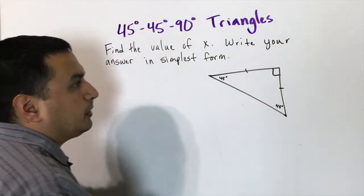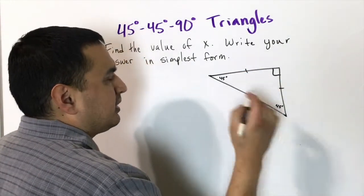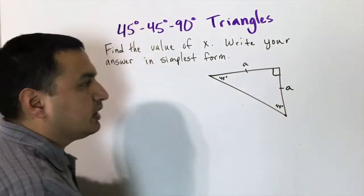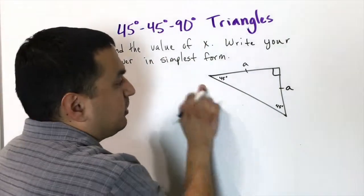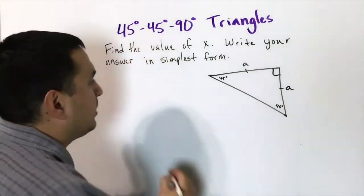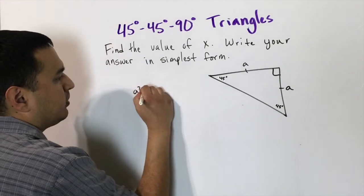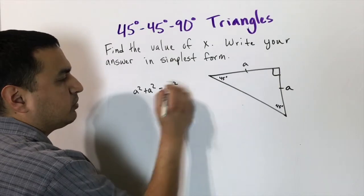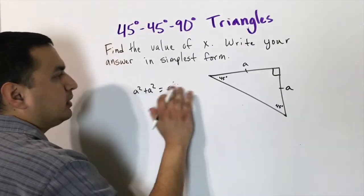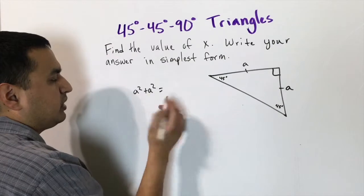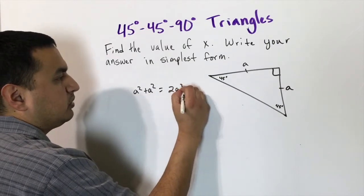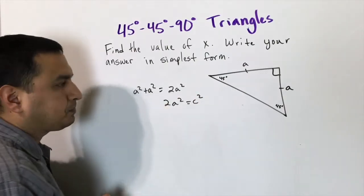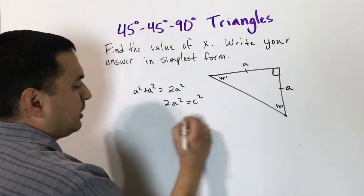We'll use the Pythagorean theorem to figure this out. If we let one leg be 'a', then the other leg also has to be 'a'. To find the hypotenuse, we have a² + a² = c², which gives us 2a² = c².